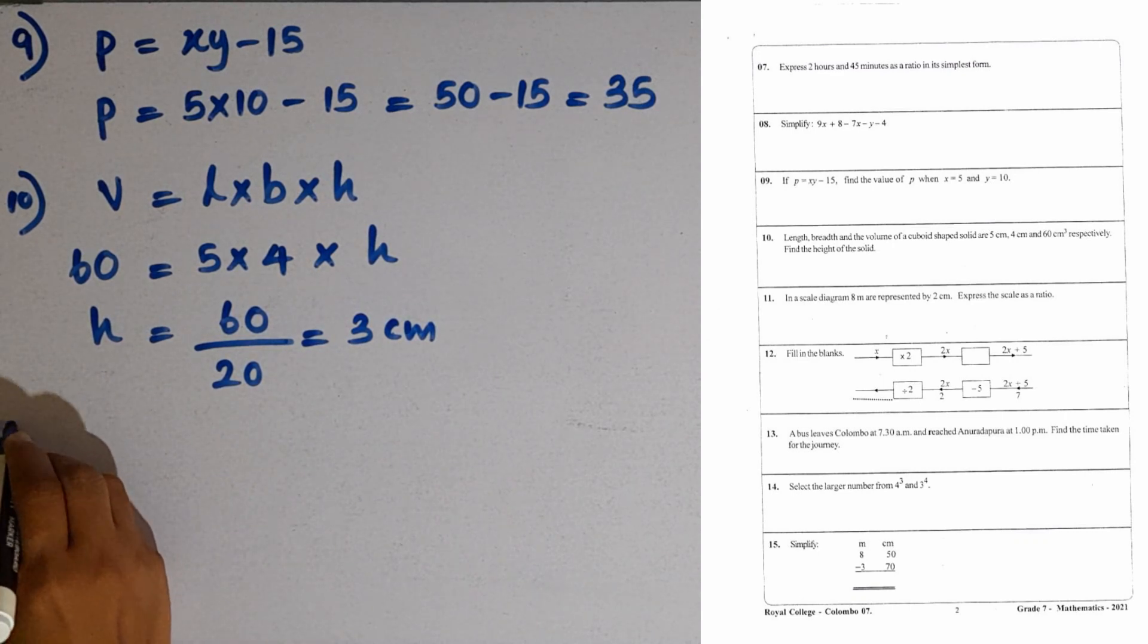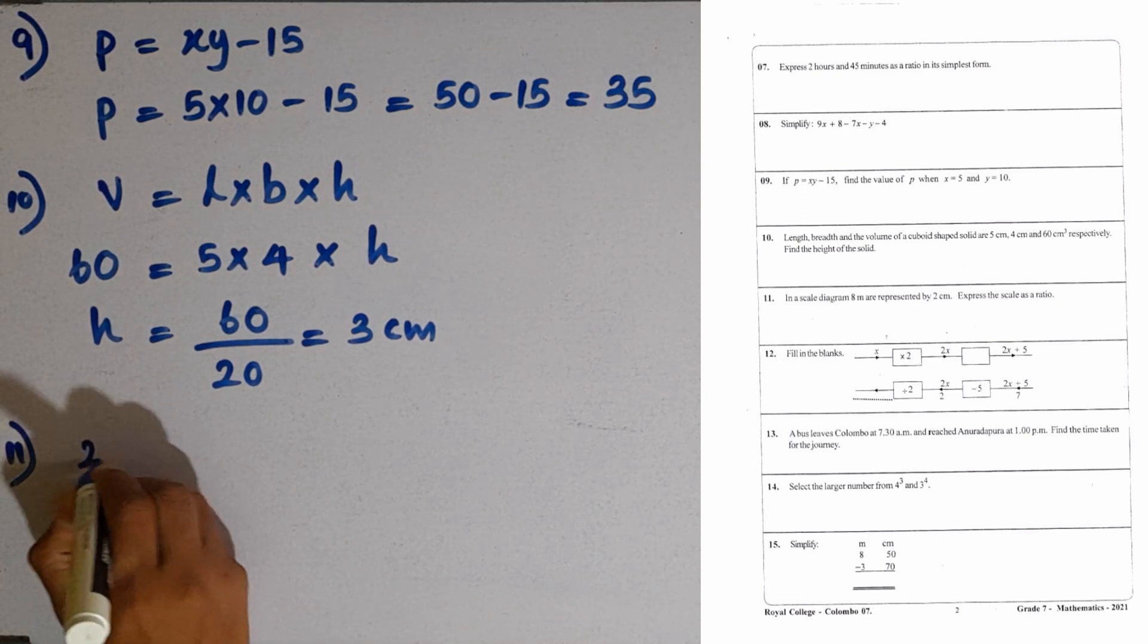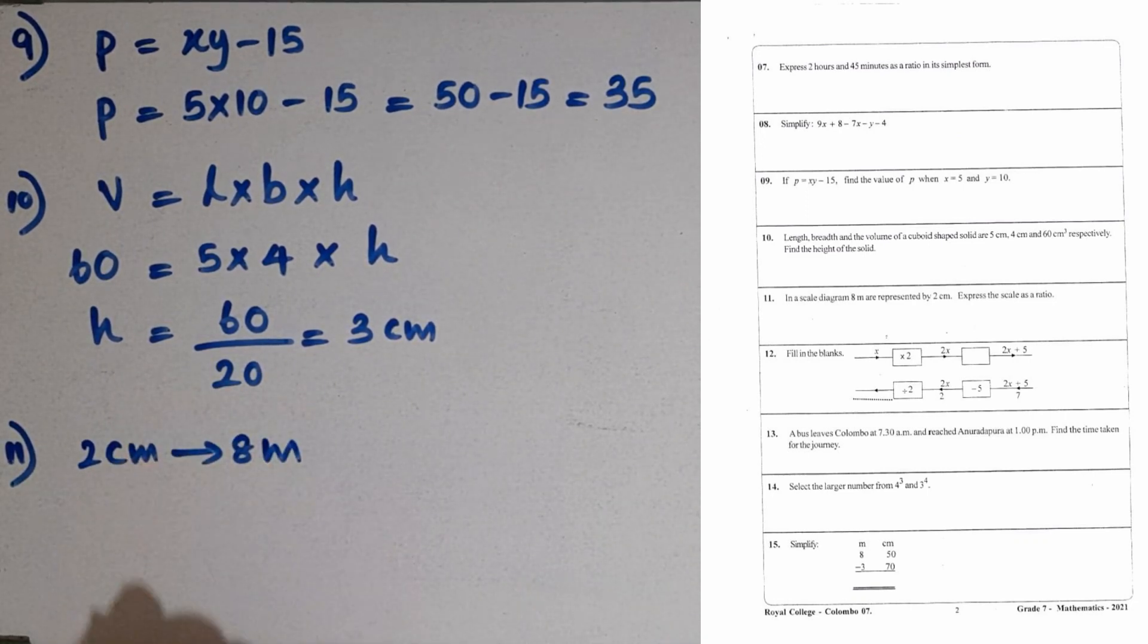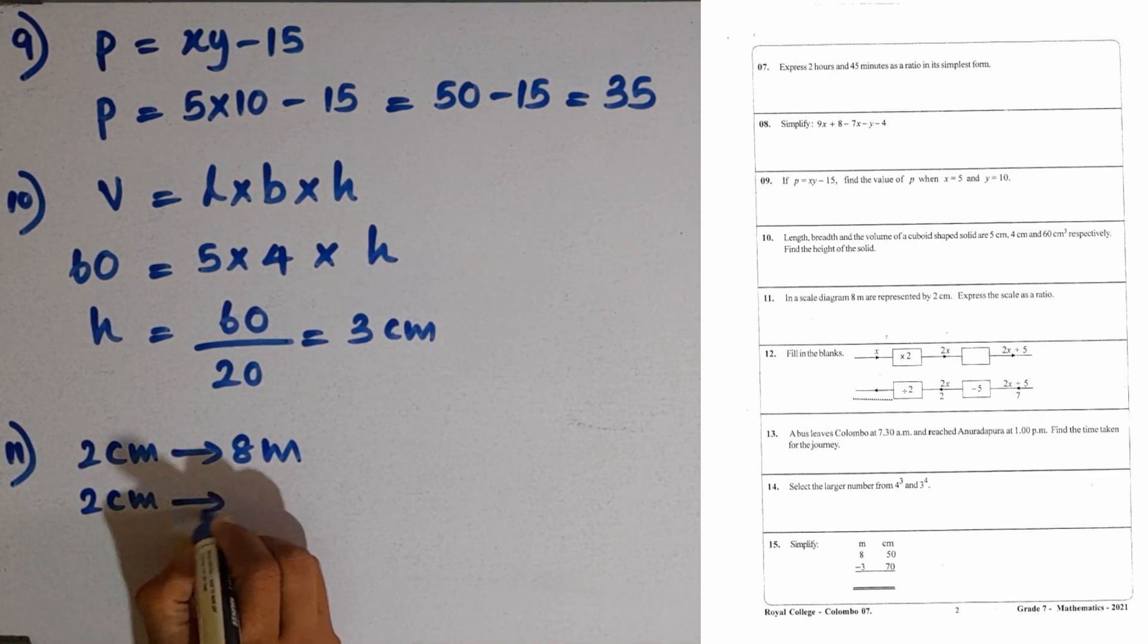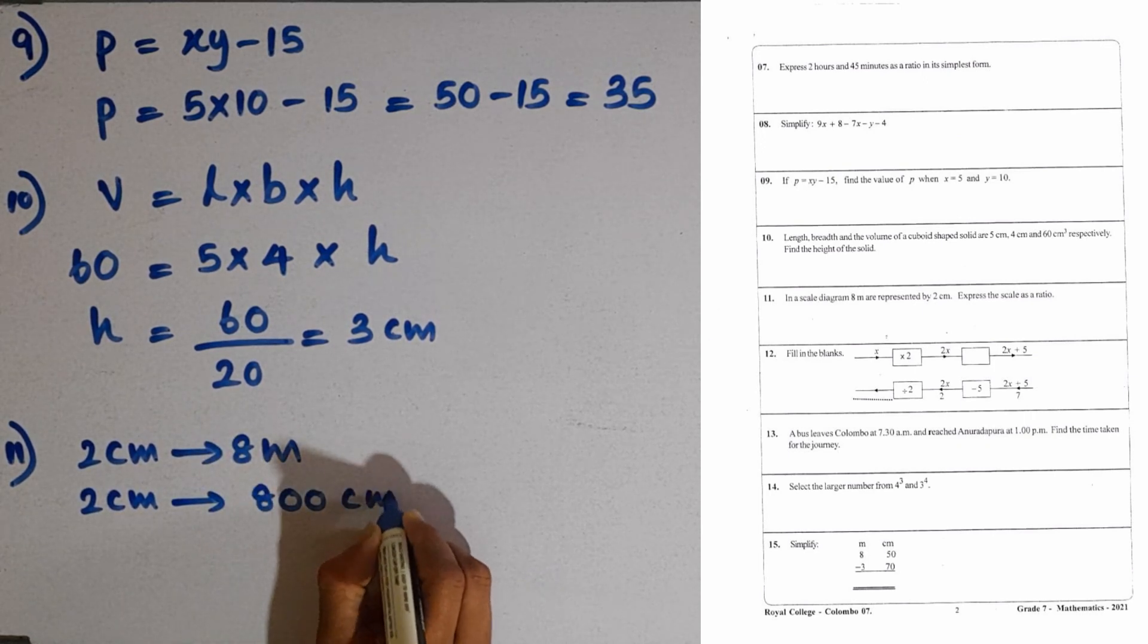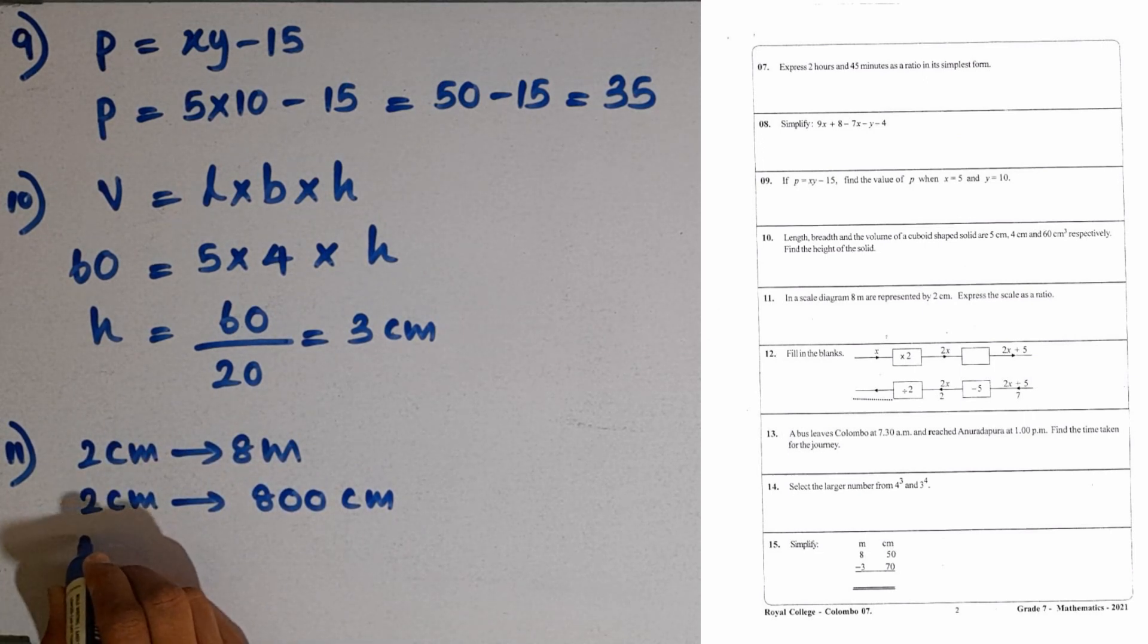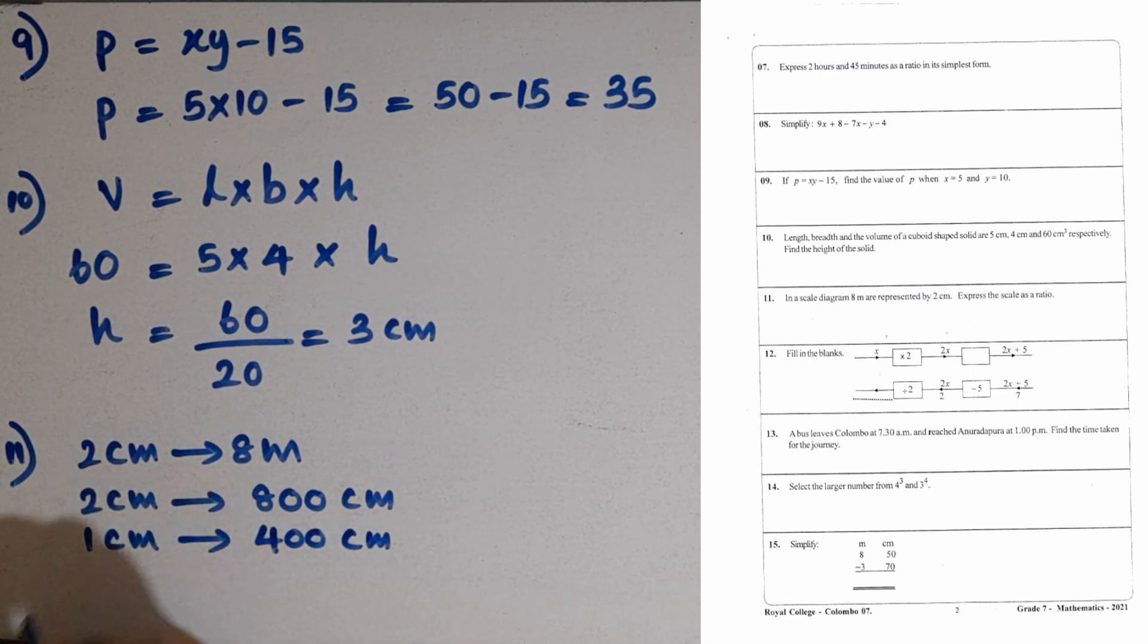Question number 11. In a scale diagram, 8 m are represented by 2 cm. Express the scale as a ratio. 2 cm represents 8 m. Then, we have to convert these meters into centimeters. 2 cm represents 800 cm, as 1 meter equals 100 cm. That means 1 cm represents 400 cm if you divide both sides by 2. Then, the ratio is 1 to 400.